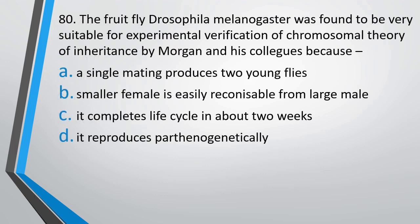Question number 80: The fruit fly Drosophila melanogaster was found to be very suitable for experimental verification of the chromosomal theory of inheritance by Morgan and his colleagues. The options are — a single mating produces only two young flies; smaller female is easily recognizable from larger male; it completes its life cycle in about two weeks; or it reproduces parthenogenetically? The correct answer is option C — because it completes its life cycle in about two weeks.